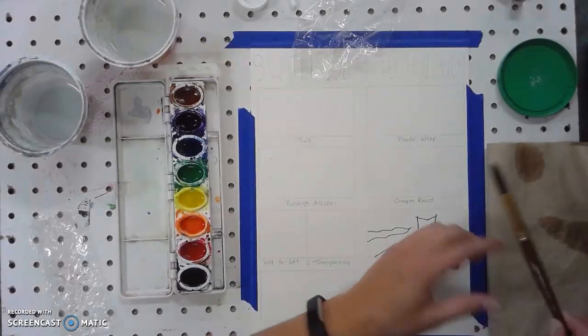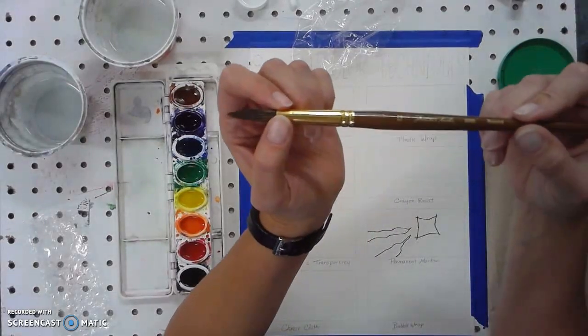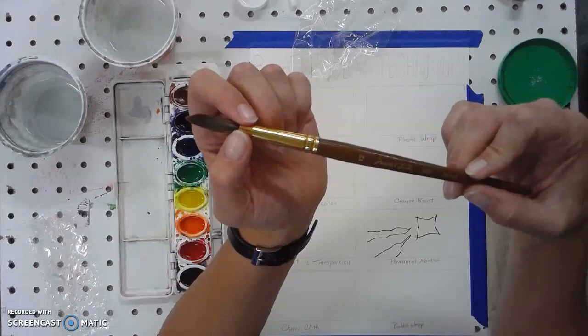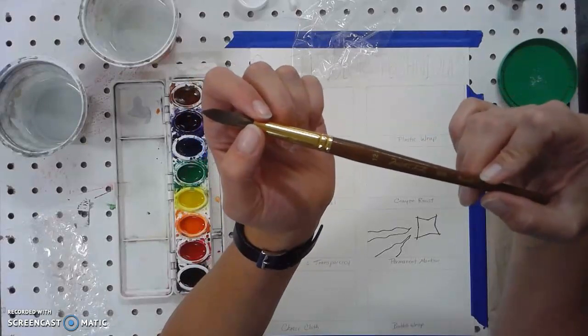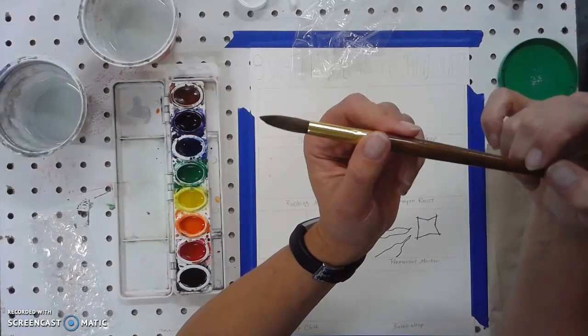A couple things about the paintbrush that we're going to be using. This is a really nice paintbrush that I bought at Hobby Lobby. A couple years ago they were like around eight to nine dollars. They're probably more expensive than that. They are my absolute favorite paintbrush to use.